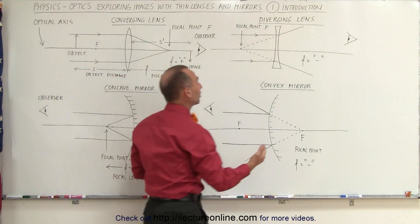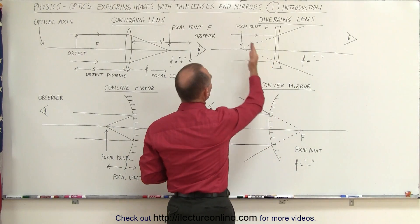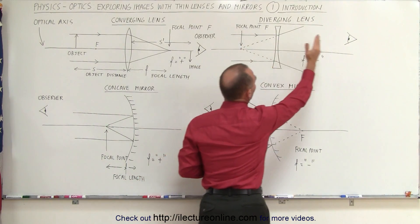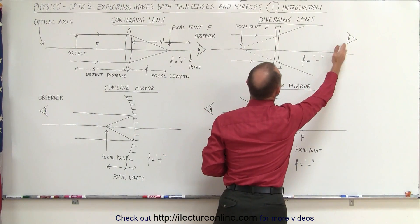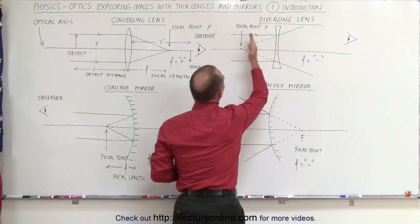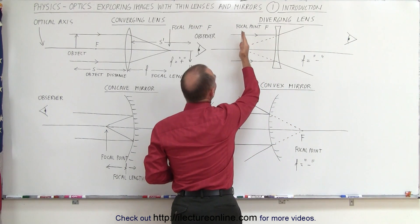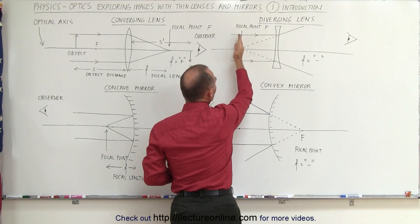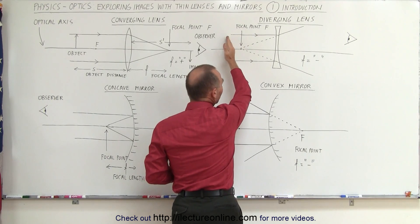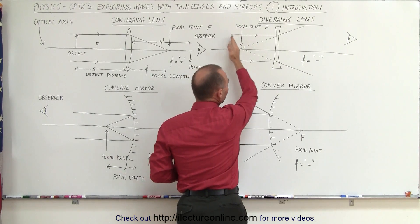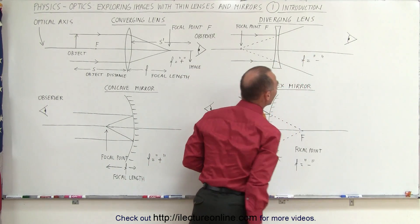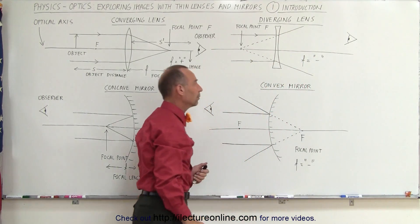Same with diverging lenses — we tend to put the object on the left side of the lens and the observer on the right side of the lens. If an image forms on the same side of the lens as the object, on the left side, we call that a virtual image. If it's on the right side of the lens, we call that a real image.